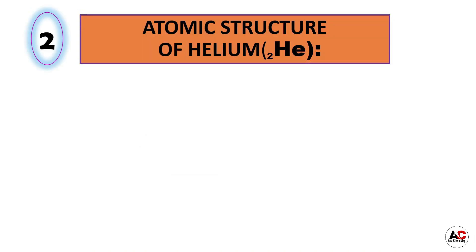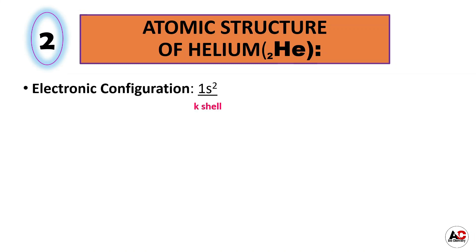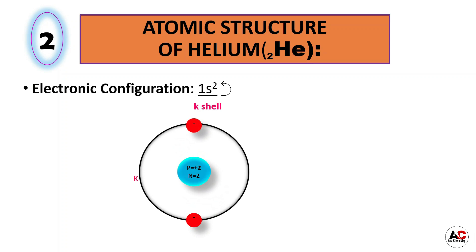Now helium. Atomic structure of helium. The atomic number of helium is 2, meaning it has two electrons. So the electronic configuration of helium is 1s2, showing that it has two electrons in the K shell. From this we can easily draw the atomic structure of helium, which shows it has two protons and two neutrons inside the nucleus and two electrons around the nucleus in the K shell.